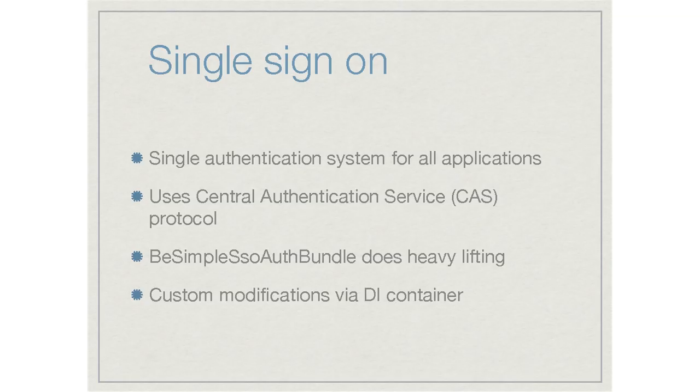We achieved this using a protocol called CAS — Central Authentication Service. You have a single authentication server that presents a login form. When a user tries to access a protected resource, they get redirected to the CAS server, log in, and the CAS server authenticates them. If valid, it sends them back to the website with a service token, which is stored by the website and used in future requests. The website then makes a curl request to the CAS server with that service token to get the user's credentials and details, storing those locally for a limited time.